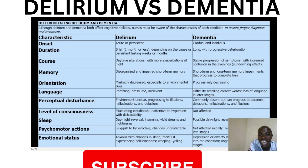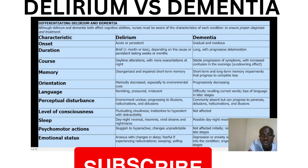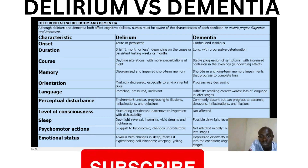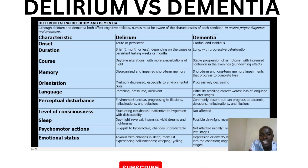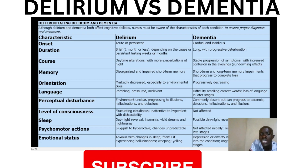When you look at delirium, on the other hand, it's an acute and reversible condition characterized by sudden onset of confusion and changes in mental status. It's caused by underlying medical conditions, medication side effects, infection, or drug or even alcohol withdrawal. Delirium is often considered a medical emergency and requires prompt evaluation and treatment.